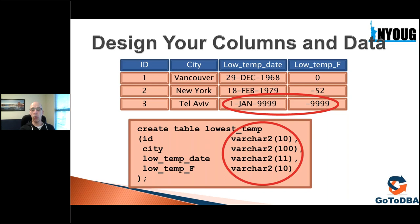Using invalid values instead of NULL can lead to performance problems because the optimizer doesn't know these are invalid - it sees year 9999 and number -999 as real values. This can confuse the optimizer about value distributions, and other applications connecting to this table won't know how to handle it. The best practice is to use NULL for unknown values.